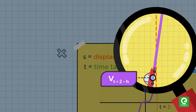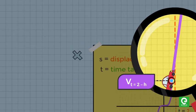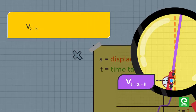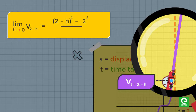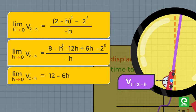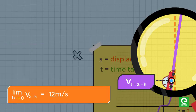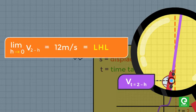Thus the instantaneous velocity at t just less than 2 can be calculated as limit h tends to 0: [(2 - h)³ - 2³] / (-h). The value is known as the left-hand limit as t approaches 2.